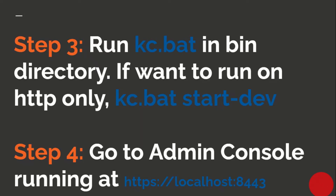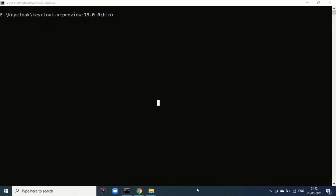Step three is to run kc.bat in the bin directory. If you want to run on HTTP only you can use the dev profile with the command kc.bat start-dev, but this is not recommended in production. That is why we generated the certificates — in a production environment you would replace the self-signed certificates with trusted certificates. Step four is to go to the admin console running at https://localhost:8443. Here we are in the bin directory and will start the server using the kc.bat file.